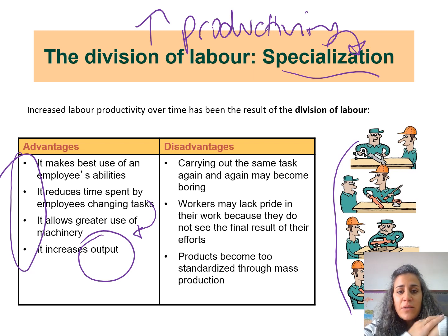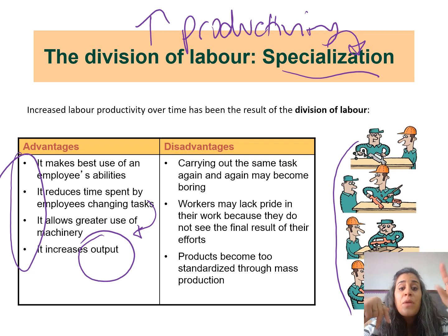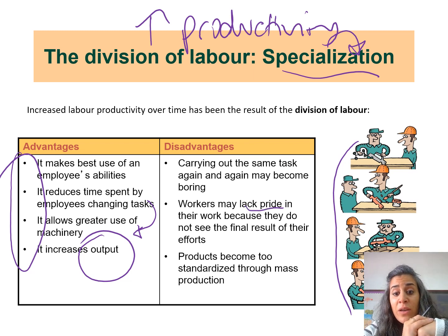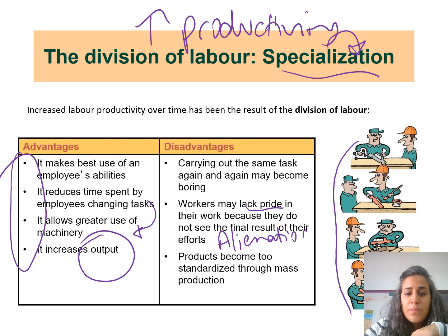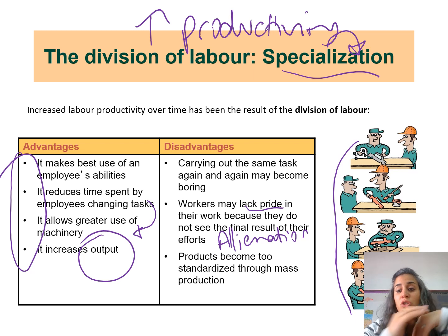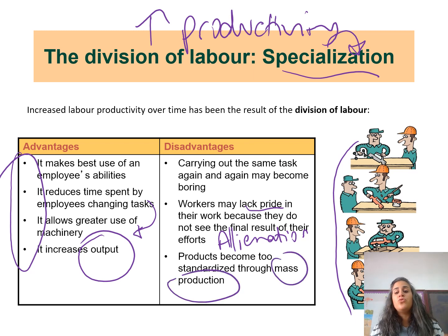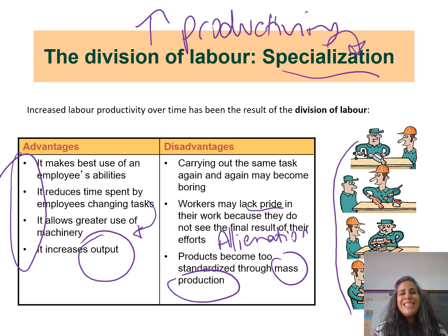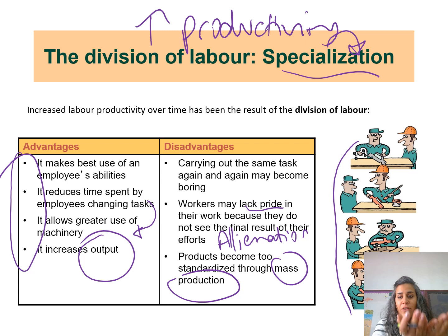The disadvantages of specialization are: since workers are doing the same thing over and over again, the job might become boring. Second, workers may lack pride in their work because they do not see the final result of their efforts — I would call this alienation. Third, products become too standardized because of mass production, which means producing in large quantities using capital, resulting in all products looking exactly the same.